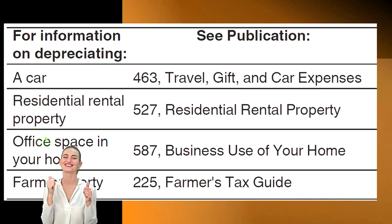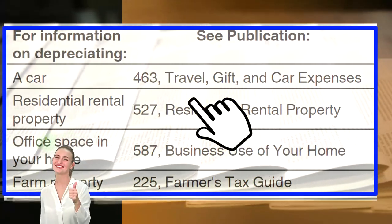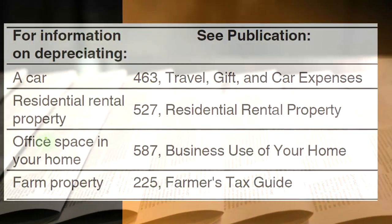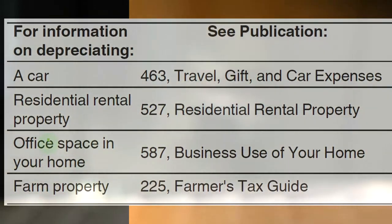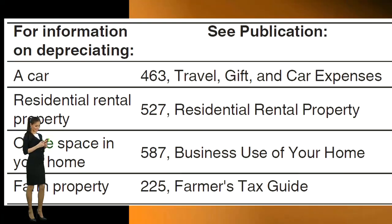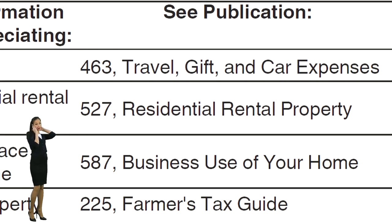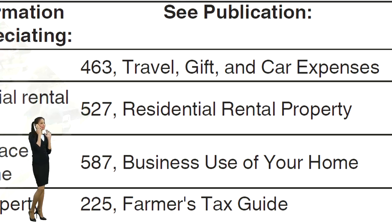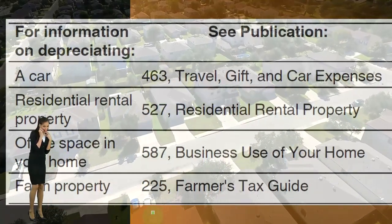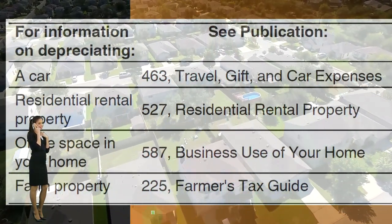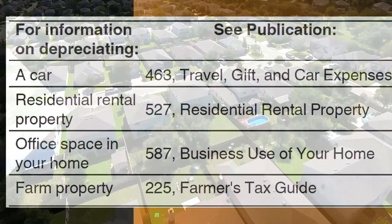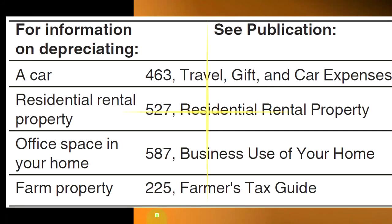For more information, depreciation methods dovetail with many other topics. For cars, see Publication 463, 'Travel, Gifts, and Car Expenses,' which covers the standard mileage versus actual expense method and whether you should be depreciating versus taking a mileage deduction. For residential rental property, see Publication 527. Depreciation can also be involved with office space in your home, so you may want to look at Publication 587.